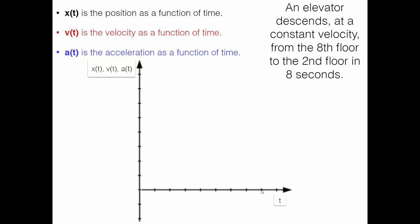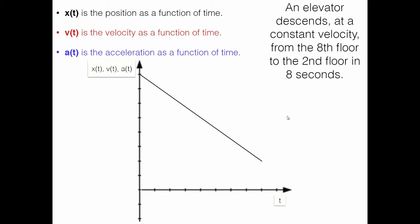From zero to eight seconds, we have to go from the eighth floor to the second floor at a constant velocity. That means it's moving down at a constant rate, so it should be linear. The eighth tick mark down to the second tick mark from zero to eight seconds gives us a constant rate of decrease or descent. So that's our position function with time in terms of floors. Now, how do we get to the velocity graph?